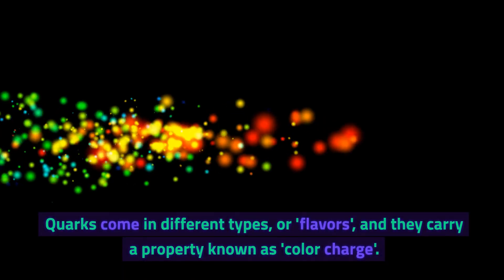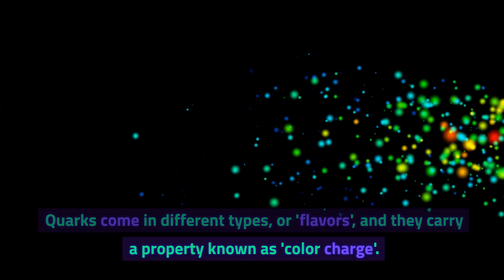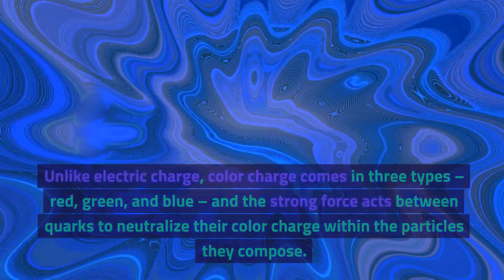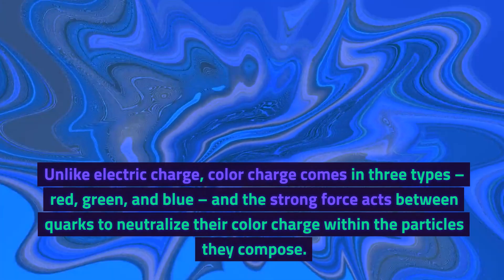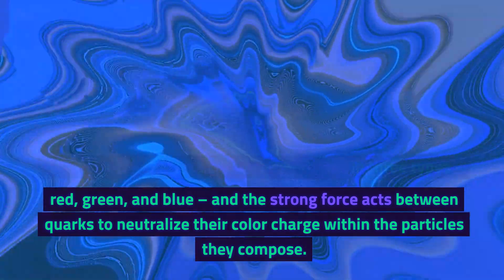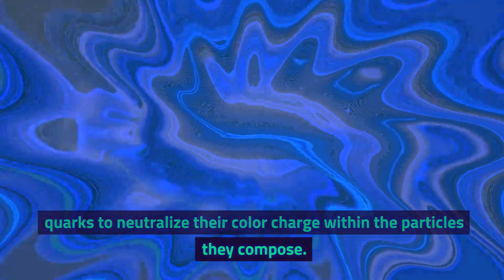Quarks come in different types or flavors, and they carry a property known as color charge. Unlike electric charge, color charge comes in three types: red, green, and blue, and the strong force acts between quarks to neutralize their color charge within the particles they compose.